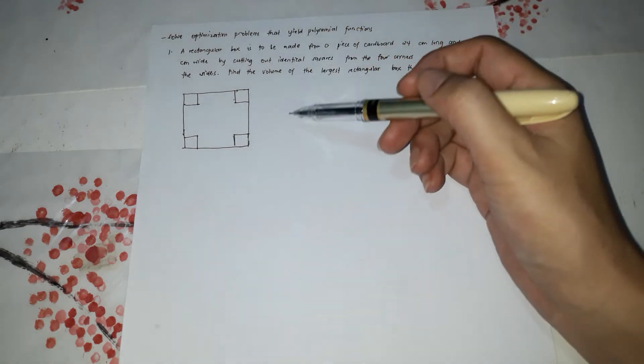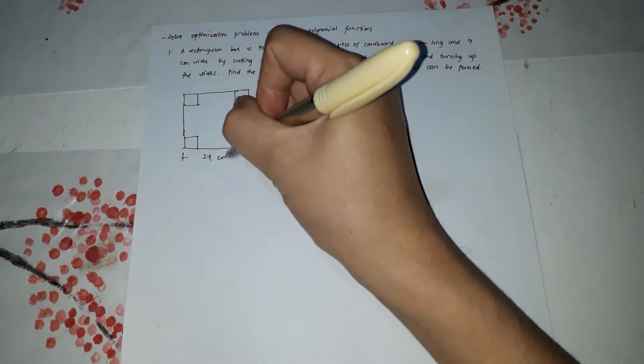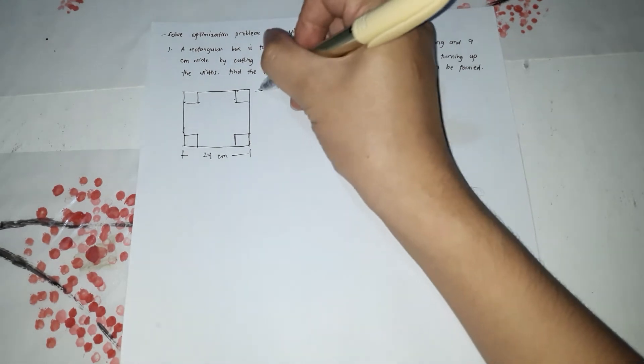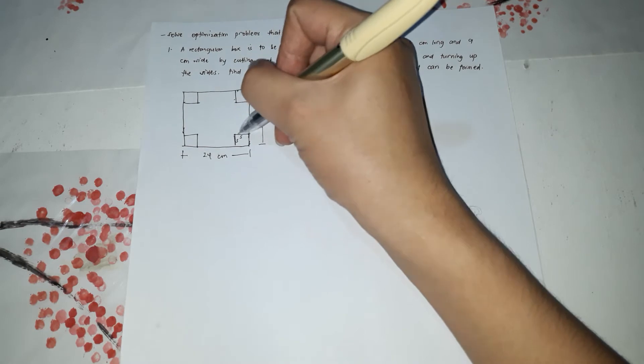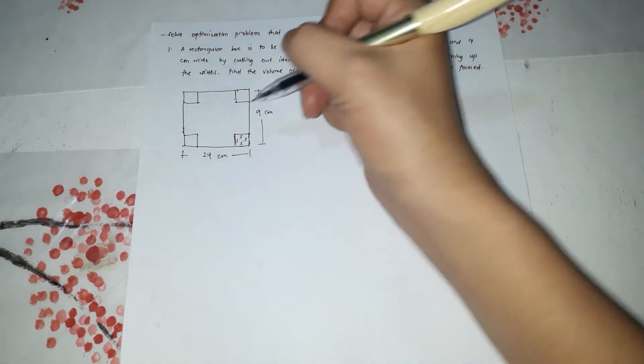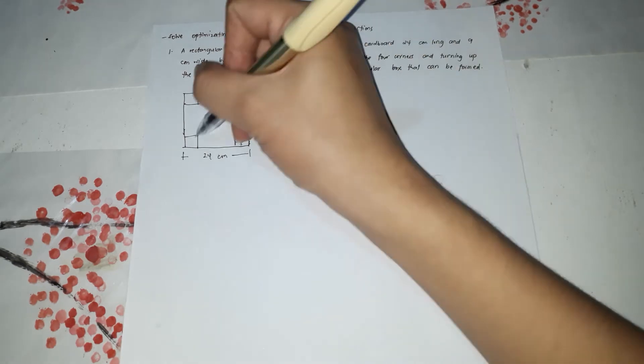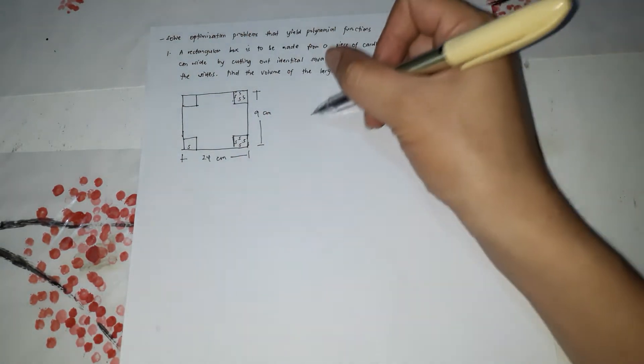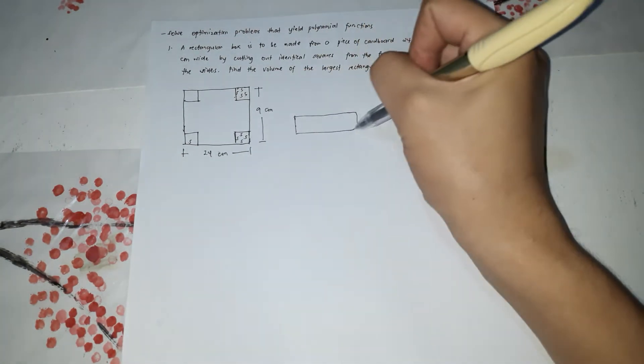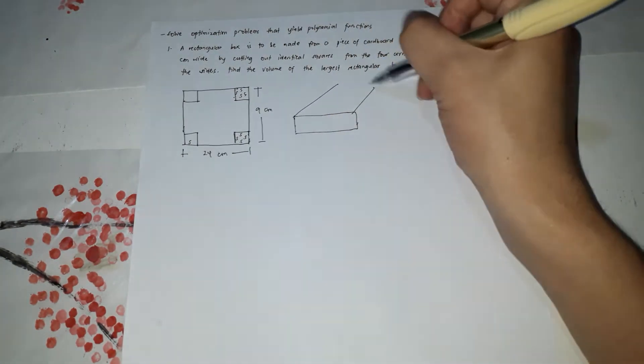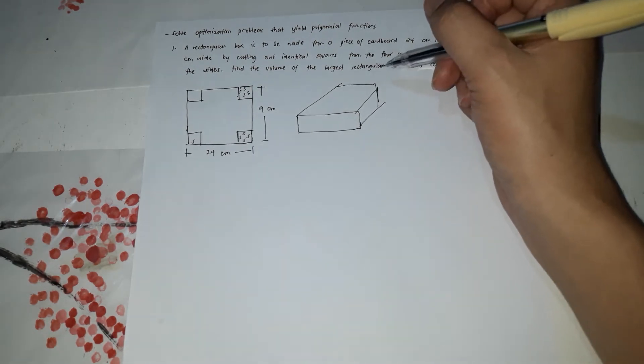So this is the rectangular box and the length is 24 cm and the height is 9 cm. And the length of the box or the squares that you're going to cut is S. So let X be the length of the square. So if this is S, so you're going to form now a box from this one. So this is the diagram of the rectangular box that you're going to form.